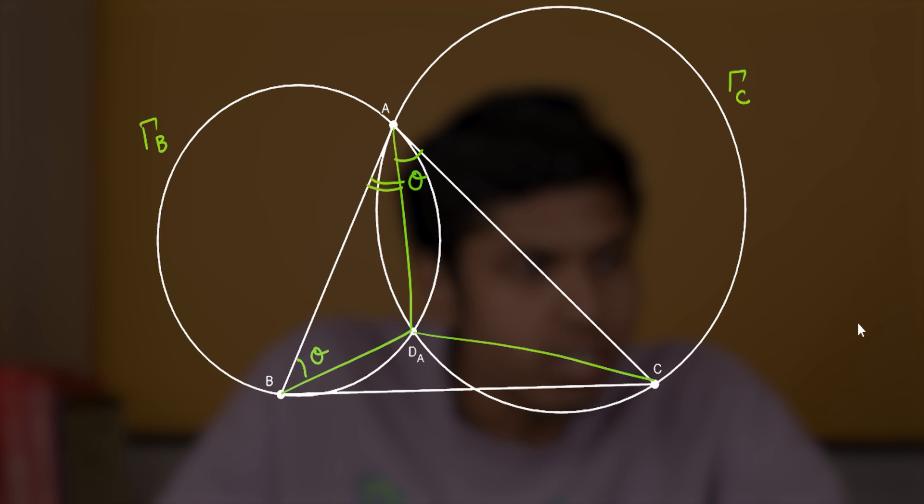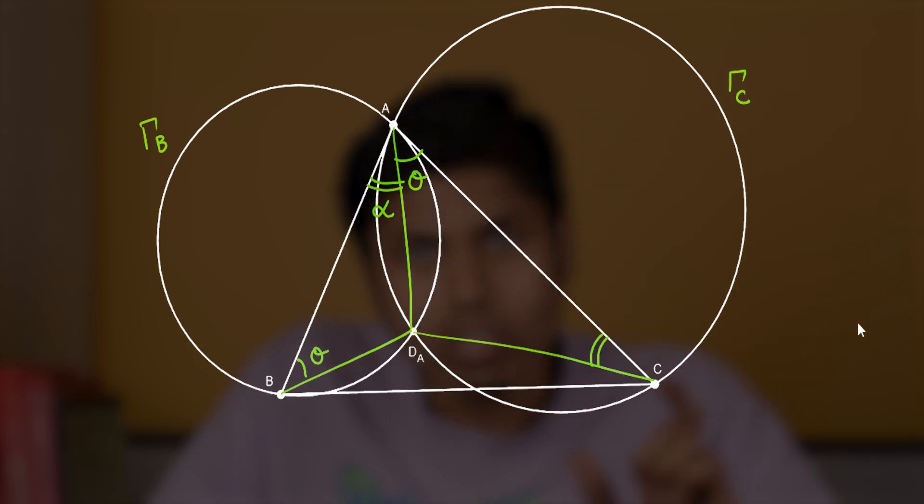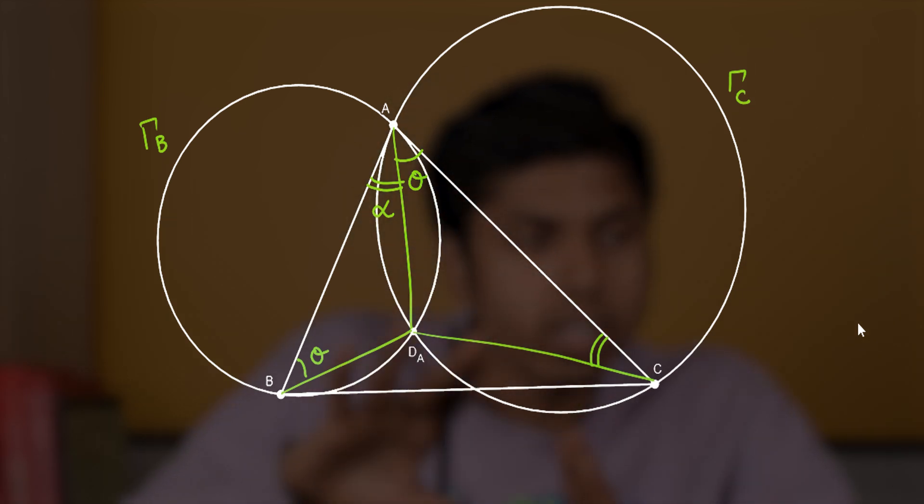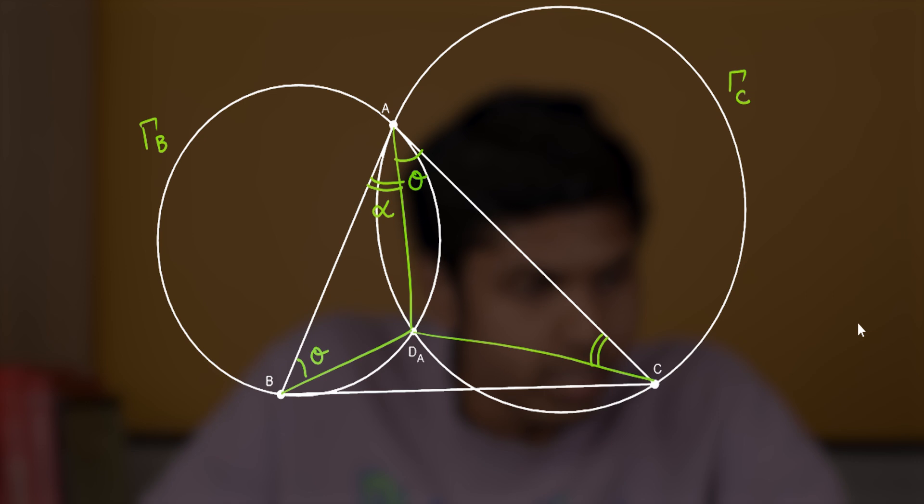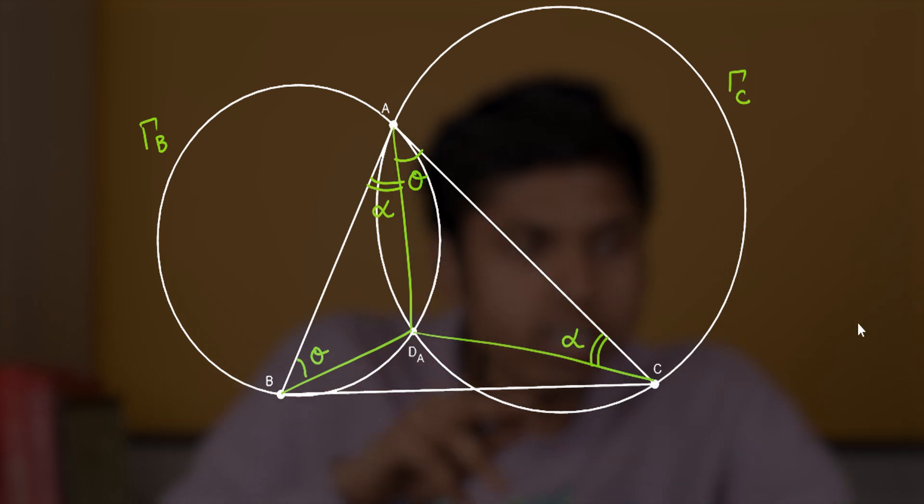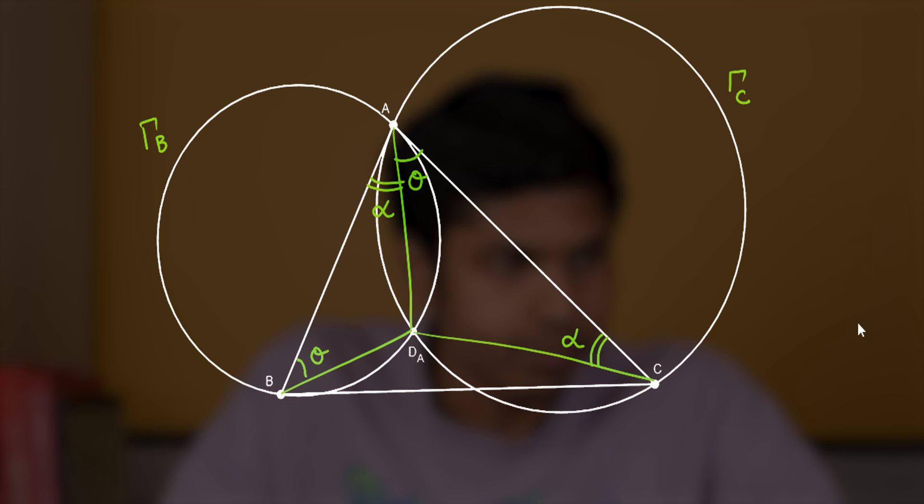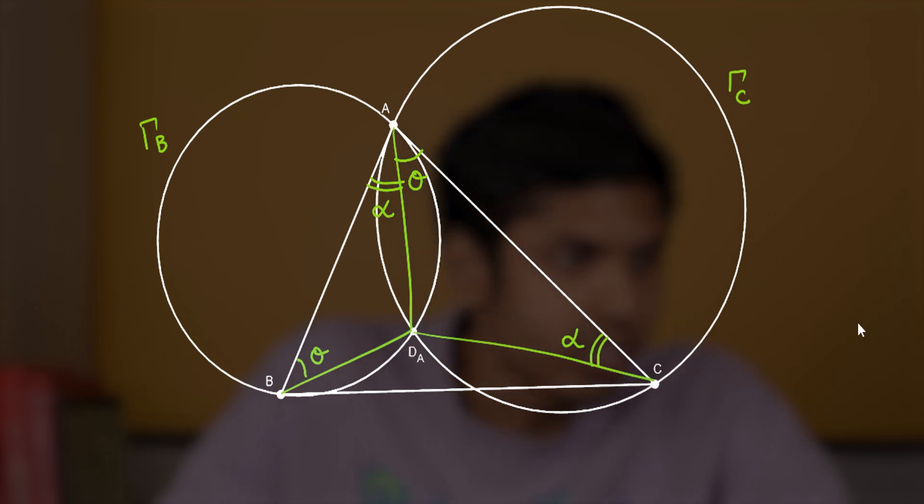Similarly, the line AB is tangent to gamma-C at A, so the angle made by AB with AD_A equals the angle made by AD_A on the circle, but this should be in the alternate segment, right? So we consider the other segment that does not intersect the angle alpha, so we get this configuration.